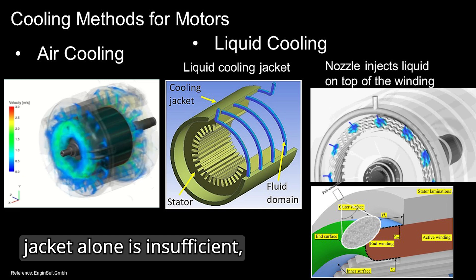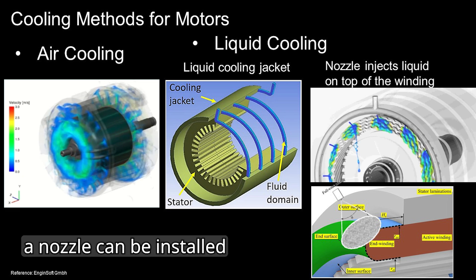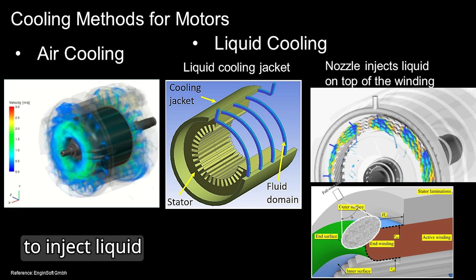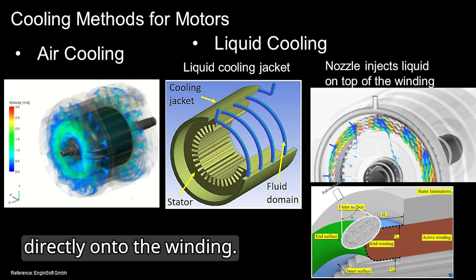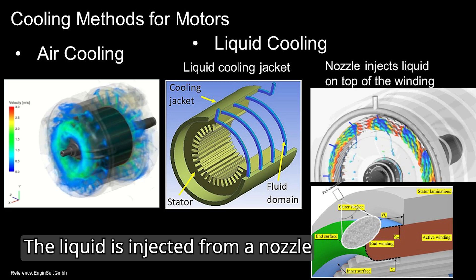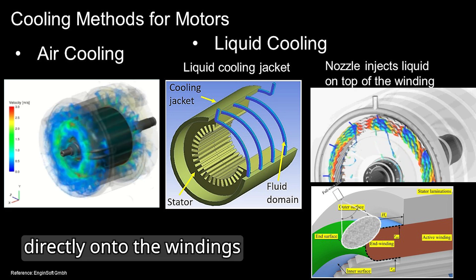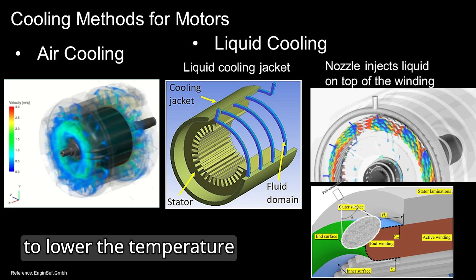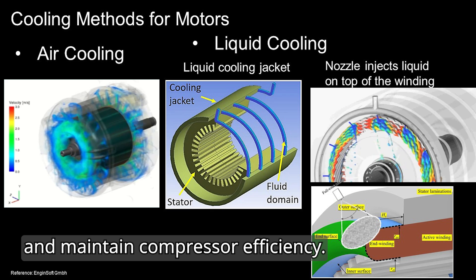If the liquid cooling jacket alone is insufficient, a nozzle can be installed to inject liquid directly onto the winding. In this case study, liquid cooling is applied. The liquid is injected from a nozzle directly onto the windings to lower the temperature and maintain compressor efficiency.